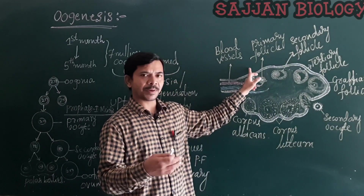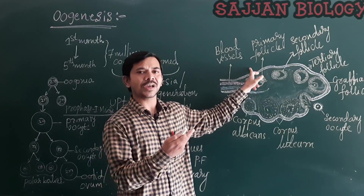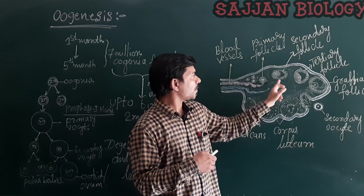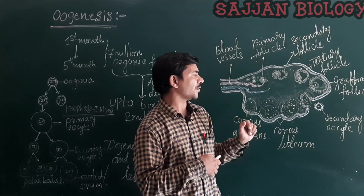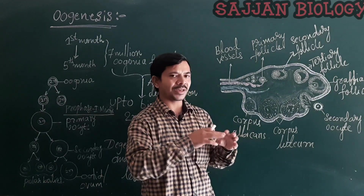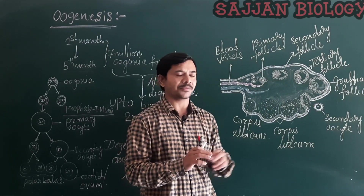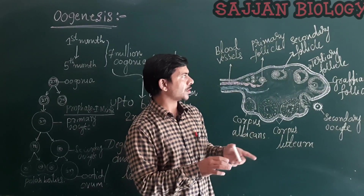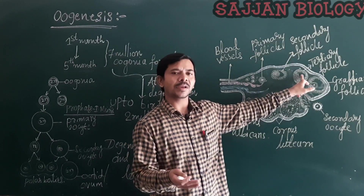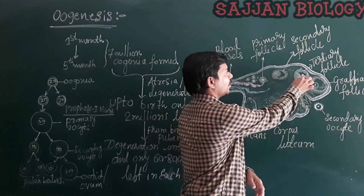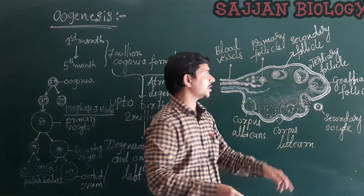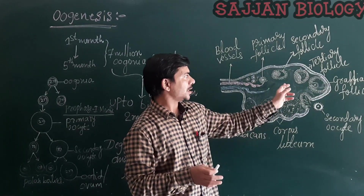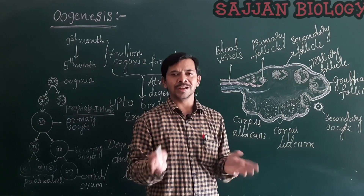Every month, each primary follicle undergoes development due to hormonal stimulation by FSH. The primary follicle is enveloped by another layer of granulosa cells to become a secondary follicle. The secondary follicle is then converted into a tertiary follicle, which is characterized by a fluid-filled cavity called the antrum. This fluid consists of liquor folliculi.